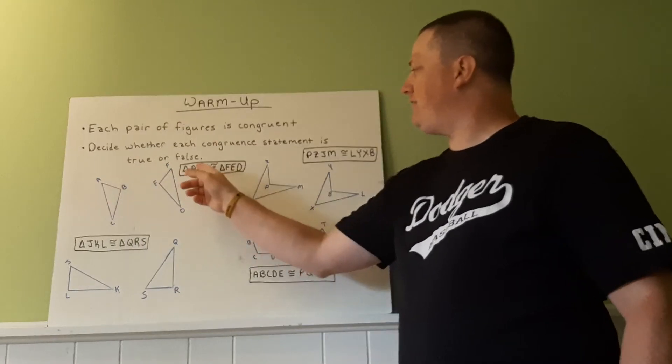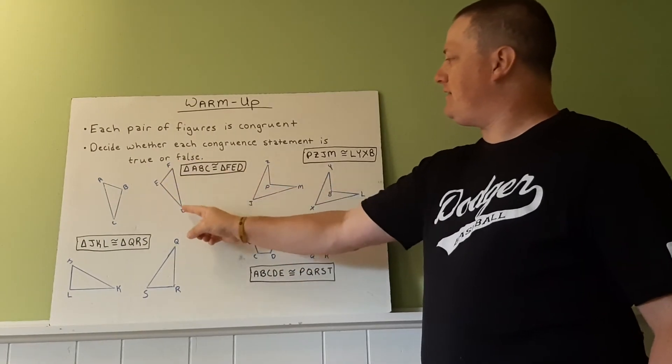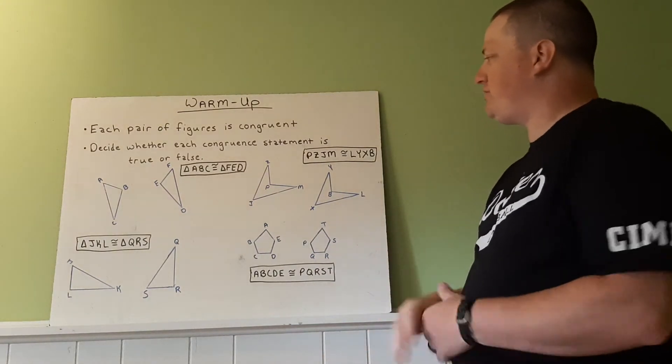you've got A, B, C triangle here. Does it match up with F to E to D in that order? That's what you're looking at.